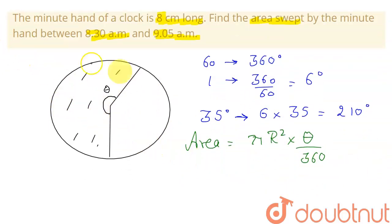See, this r is given to us as 8 centimeters, as the length of this minute hand is 8 centimeters. So this area will be: the value of pi will be 22 by 7, and this radius is given as 8 squared, so it will be 8 into 8, theta we have calculated as 210, and this will be 360.